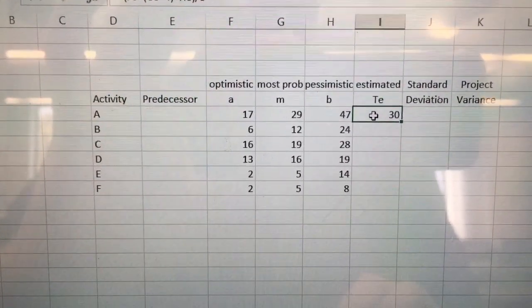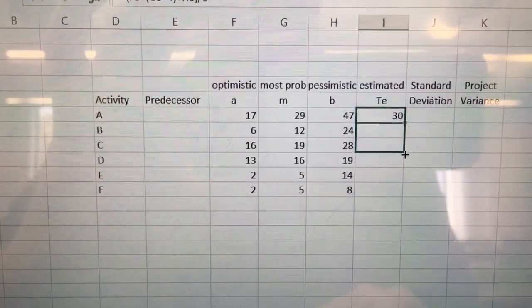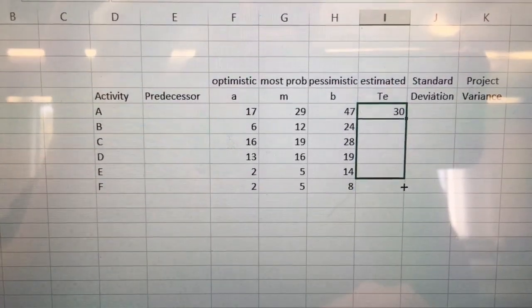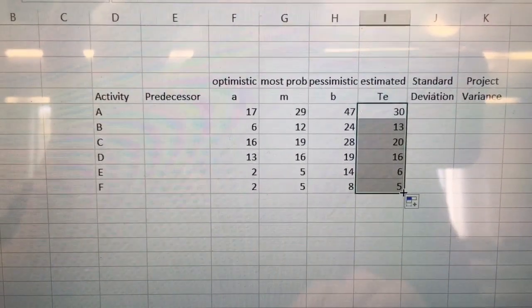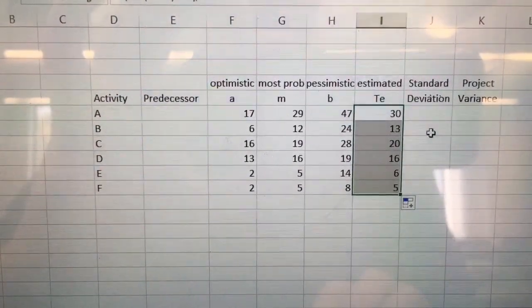And we now have our estimated time for that particular activity. I'm going to simply take that and drag it down. That's going to drag that formula down and copy it for all of these. I only had to enter the formula once. Now I'm all set to go.